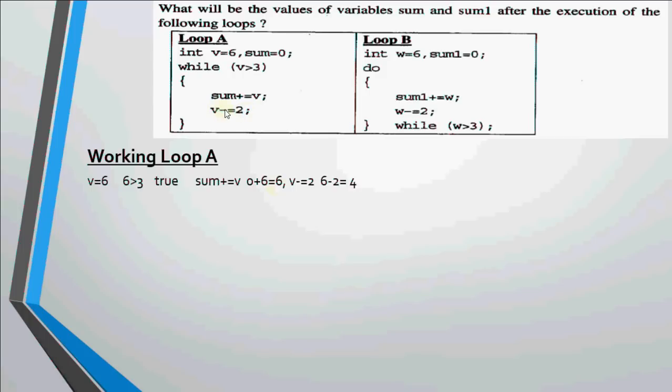After that the next line is v minus equal to 2. That means v should be decreased by 2. So it was 6 initially. When it is decreased by 2, we get 4. After getting 4, we go over here again to check the condition. Now 4 greater than 3 is true. It's true so it comes inside here.